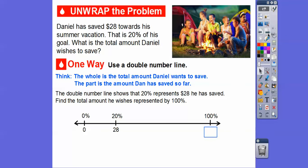One way is we can use what's called a double number line. The whole is the total amount that Daniel wants to save. And the part is how much he saved so far, that $28. So the double number line shows 20 percent on top, and that represents $28, which is the part.